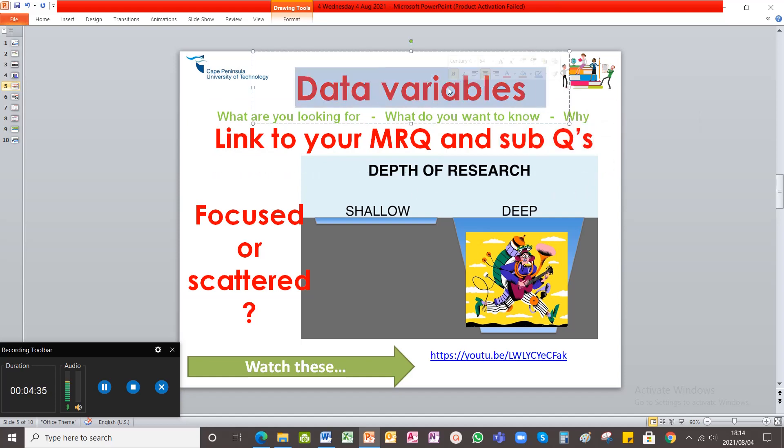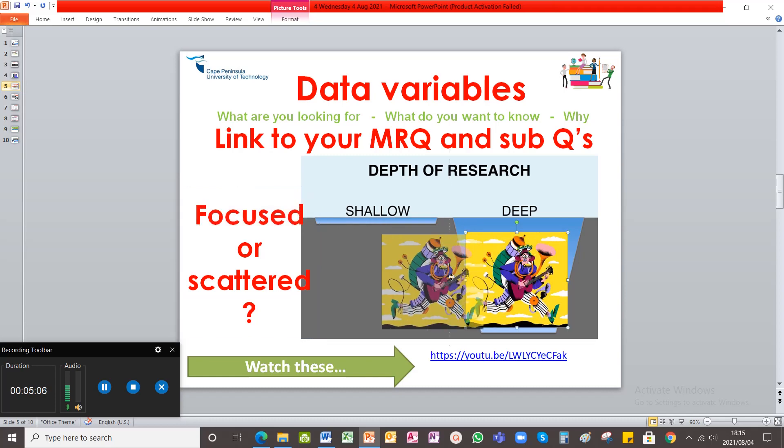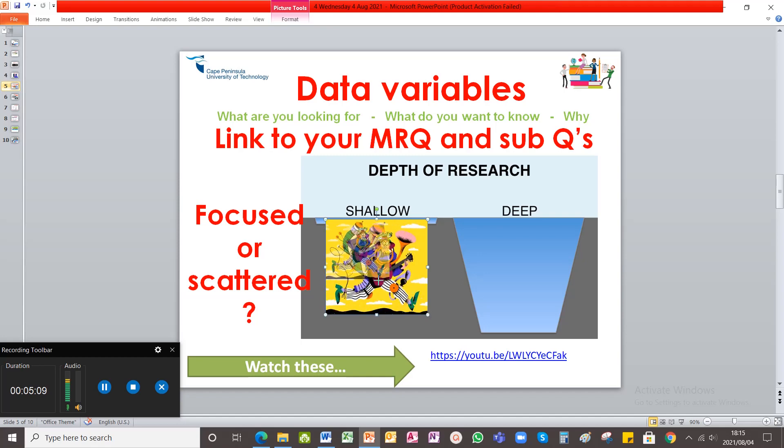Now when we look at variables or factors, that means what are you going to ask your participants? So for example, if your topic is bullying, are you going to ask them only about cyberbullying or are you going to ask them about different types of bullying? So if you are going to only look at cyberbullying, that means that your variable is focused on cyberbullying, which means the depth of your research will be very deep. Let me put this guy on the other side. So that means you focus only on one aspect, cyberbullying, and you only ask your questions on cyberbullying.